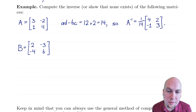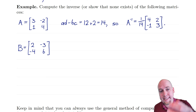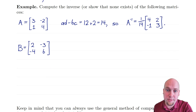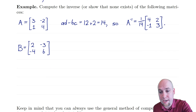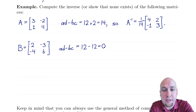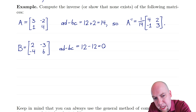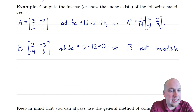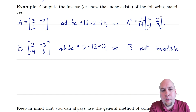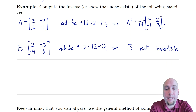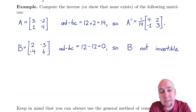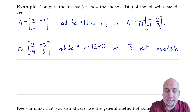Another example: the matrix with entries 2, -3, -4, 6. Compute AD minus BC: two times six minus (minus three times minus four). That's 12 minus 12, which equals zero — careful with the triple negatives. So the conclusion is that matrix is not invertible, because AD minus BC equals zero. If you tried the row reduction method, you'd find a zero row appearing and you'd never get the identity matrix on the left.